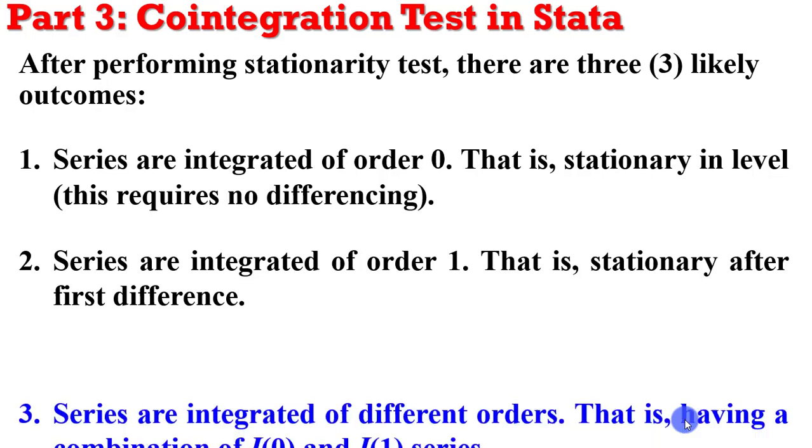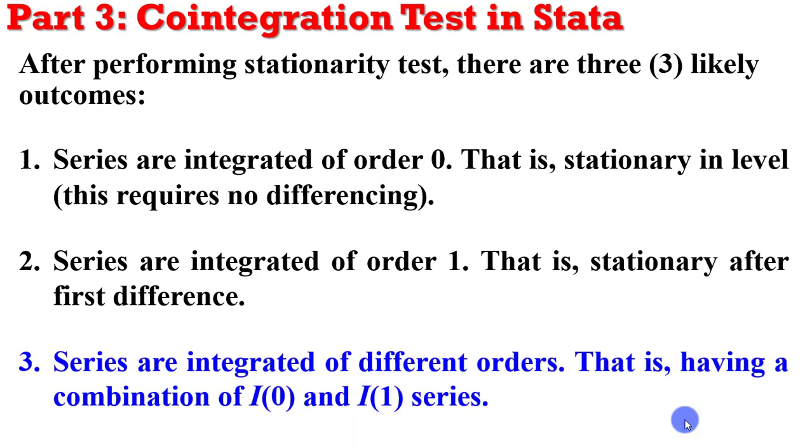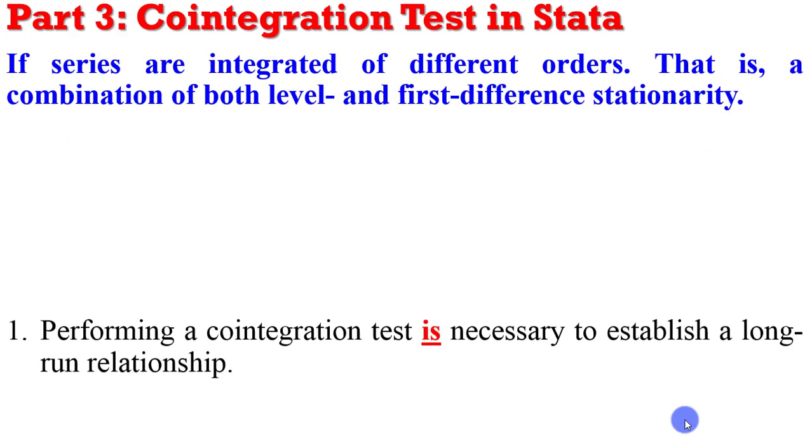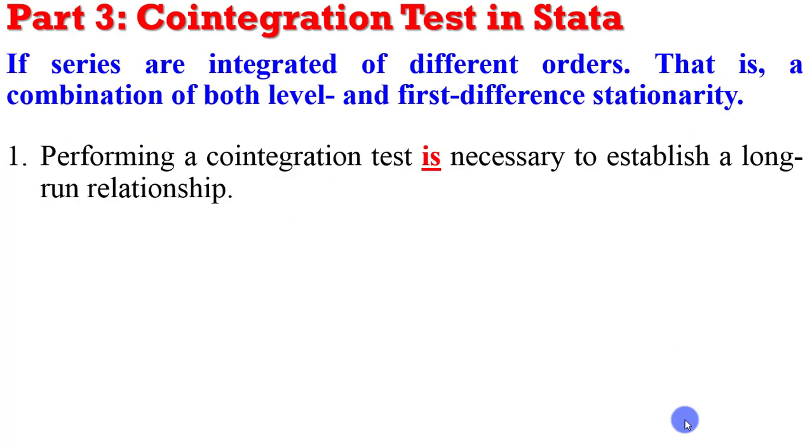While the third likely outcome that we are going to do today will be when all your variables are integrated of different orders. That is, you are having a combination of both I(0) and I(1) series. If that is the case, you should still go ahead to perform a cointegration test.